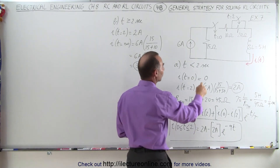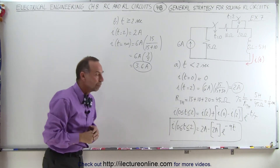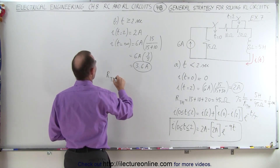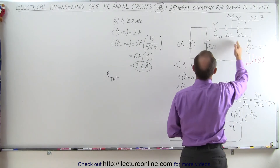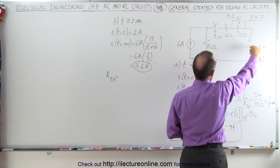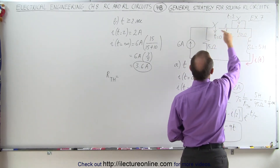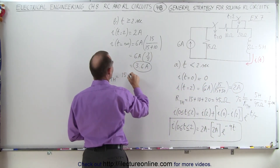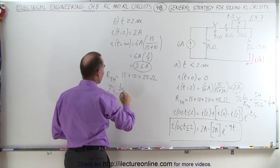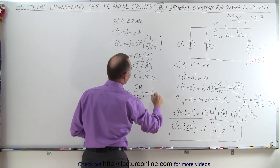For the first two seconds it goes from zero to two amps; after two seconds it increases from two amps up to 3.6 amps. But how fast will that happen? Again, we need to find the time constant, which means we first find the Thevenin resistance. Now that both switches are closed, we remove the current source. Notice from the inductor we can go through this path and then that path, so the total resistance now will be 15 plus 10, or 25 ohms. The time constant, equal to the inductance divided by the Thevenin resistance, is 5 henries divided by 25 ohms, which is one-fifth of a second.